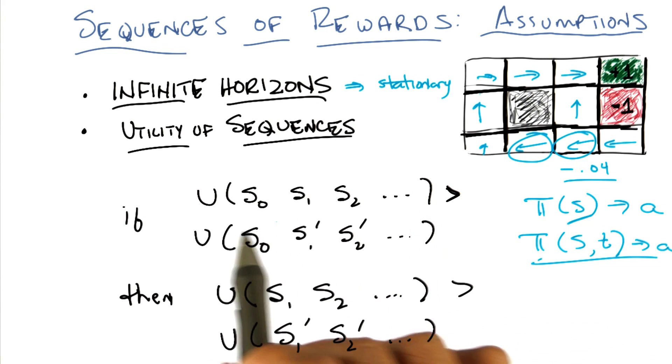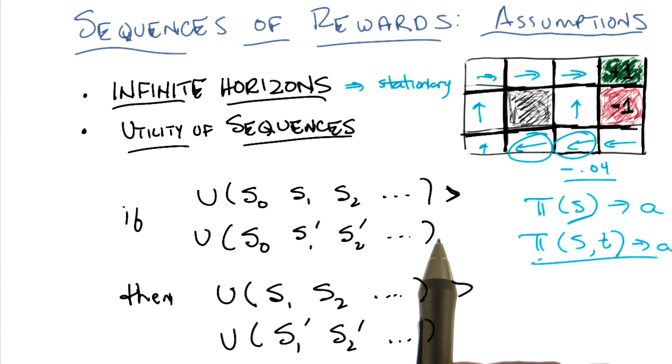If we have a utility for the first, and that utility happens to be greater than the utility for the second, then it also turns out that we believe that the utility for S1, S2, dot dot dot, is greater than the utility for S1 prime, S2 prime, dot dot dot. All right, so these are two different sequences, the S's and the S primes are two different sequences. And in the beginning, we're comparing them with S0 stuck in front of both of them. And we're saying, if I'd prefer the S0 followed by all the S's to S0 followed by the S primes, then I have that same preference even with those S0s missing. Right. And so this is called stationarity of preferences.